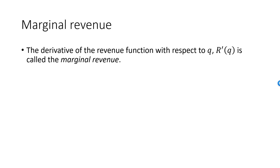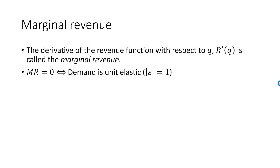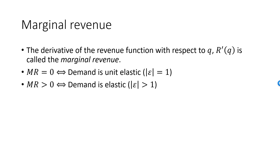Let's rephrase the relationship between the derivative of the revenue function as a function of Q and the elasticity in terms of marginal revenue. Marginal revenue is zero if and only if demand is unit elastic at the particular quantity. Marginal revenue is strictly positive if and only if demand is elastic at the particular quantity.